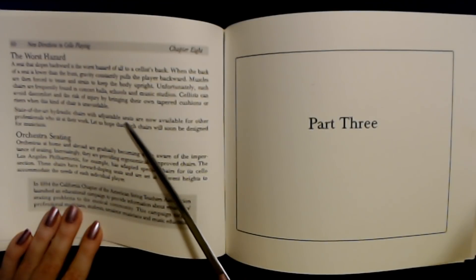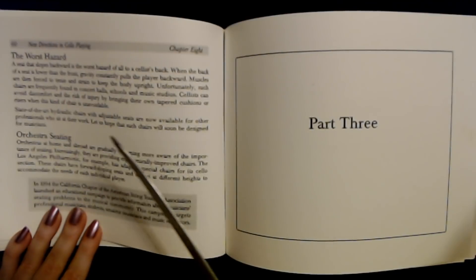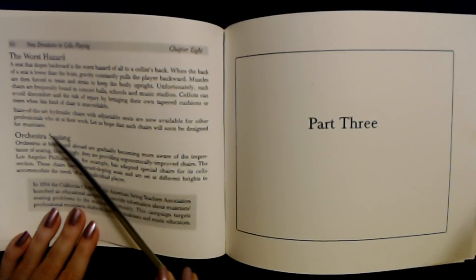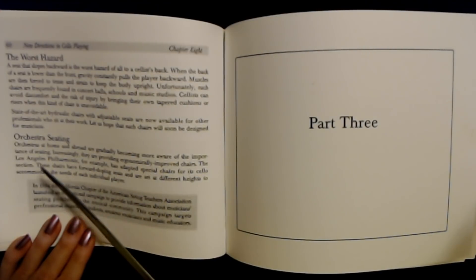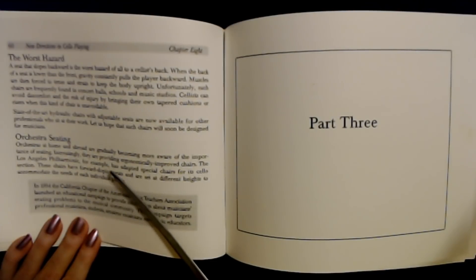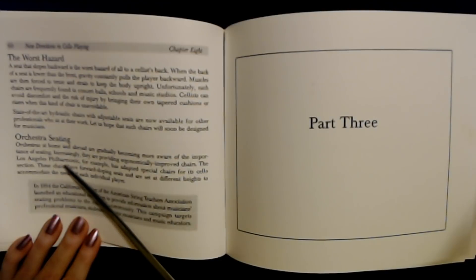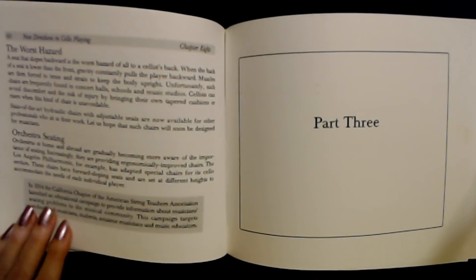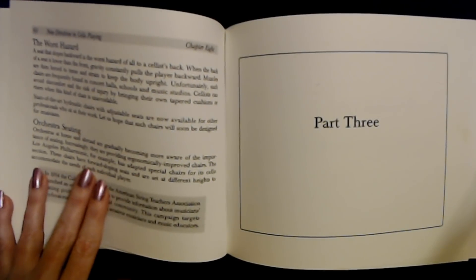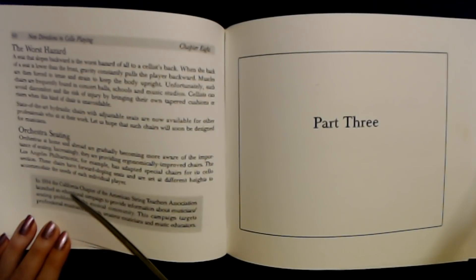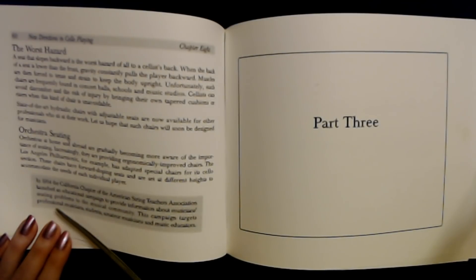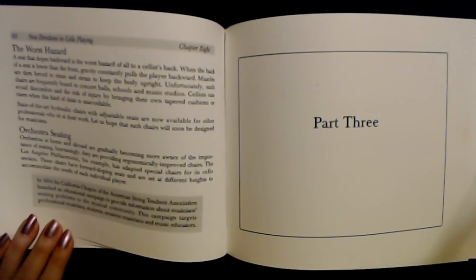State-of-the-art hydraulic chairs with adjustable seats are now available for other professionals who sit at their work. Let's hope that such chairs will soon be standard for musicians. Orchestra seating. Orchestras at home and abroad are gradually becoming more aware of the importance of seating. Increasingly, they're providing ergonomically improved chairs. The Los Angeles Philharmonic, for example, has adopted special chairs for its cello section. These chairs have adjustable seats in several different heights to accommodate the needs of each individual player. In 1994, the California chapter of the American String Teachers Association launched an educational campaign to provide information about musicians' seating problems to the musical community. This campaign targets professional musicians, students, amateur musicians, and music educators.